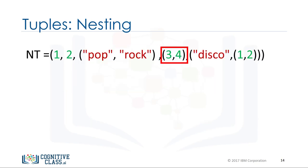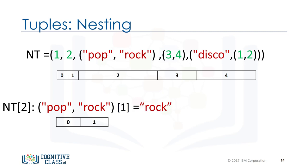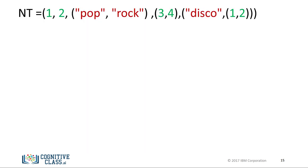A tuple can contain other tuples as well as other complex data types — this is called nesting. We can access these elements using the standard indexing methods. If we select an index with a tuple, the same index convention applies, and we can then access values in the tuple. For example, we could access the second element, and we can apply this indexing directly to the tuple variable nt. It is helpful to visualize this as a tree.